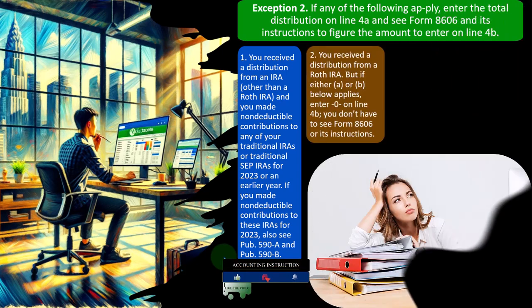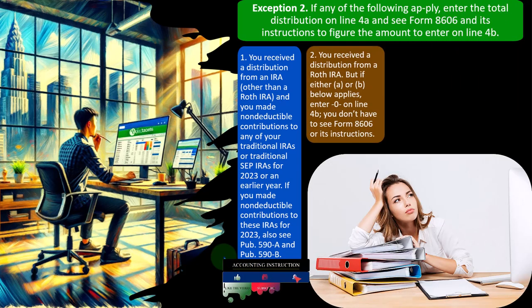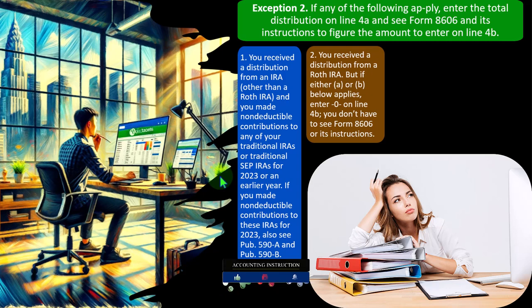The idea here is whether there's a way to take the money out of an IRA and have it not be subject to tax. If we pull the money out of the IRA, usually it's going to be subject to tax and possibly penalties if pulled out early. The primary exception, for example, being the rollover situation.